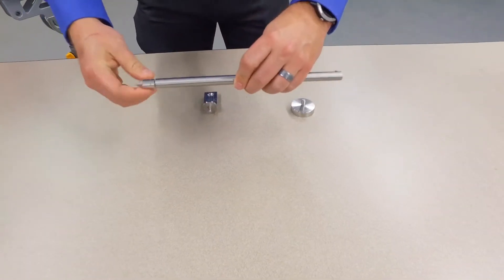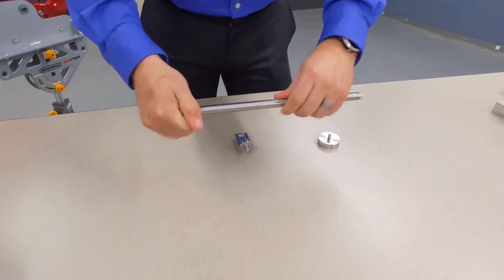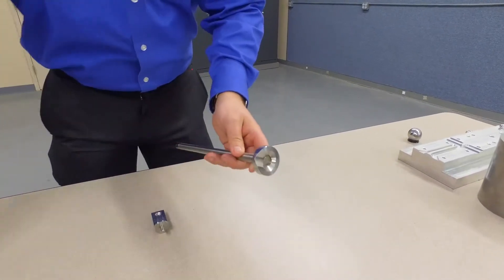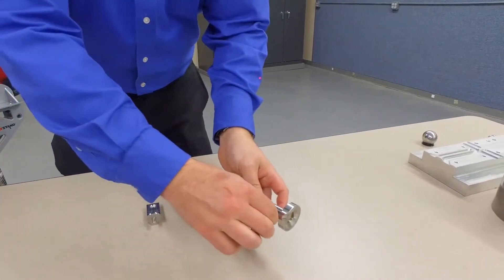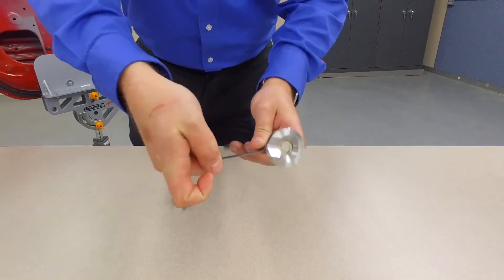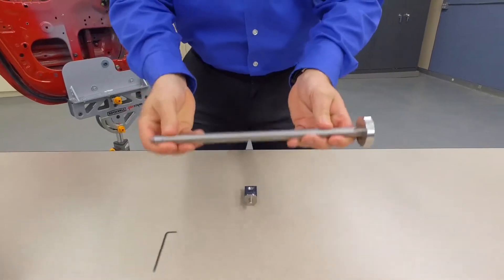Put the hard point adapter on the end and screw it in. 6mm target nest on the top. Tighten the steel and nylon set screw so it's tight. Now we have a complete tool.